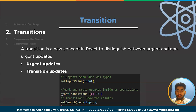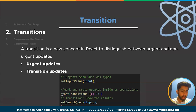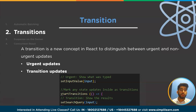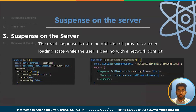So with transitions: if you are doing one task and some other urgent task comes up, React will stop the earlier task and start on the higher priority task, then resume the original task. Now let's move ahead to suspense on the server.